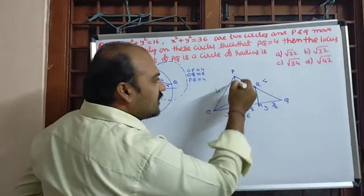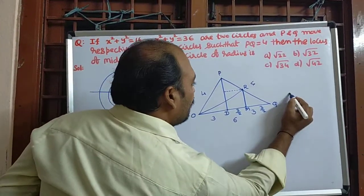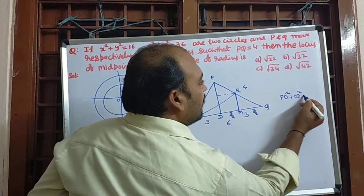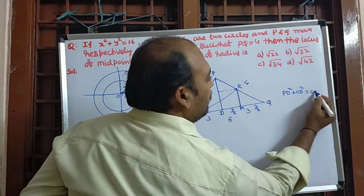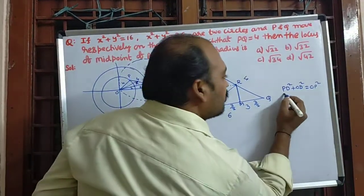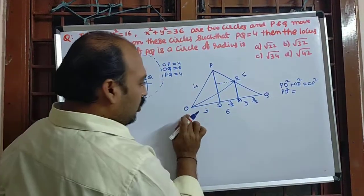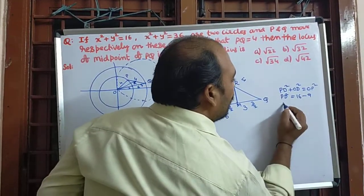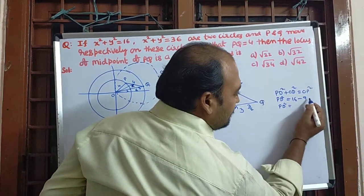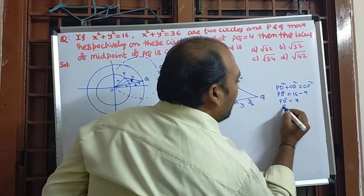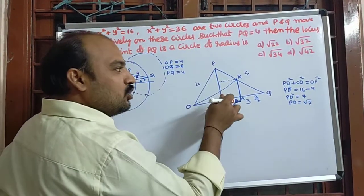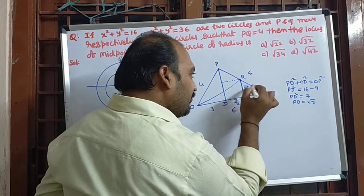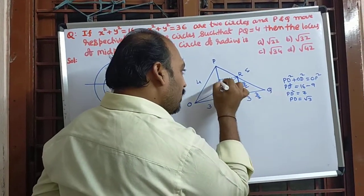Here 4, here 3 is there, obviously PD will be there. So from that, PD² + OD² is equal to OP². From that I want PD value. So PD² is equal to OP² means 4² = 16 minus OD² means 9. So PD² is equal to 16 minus 9 = 7. So PD is equal to √7. So this is completely √7. Whenever OR is the midpoint, from here to here it is √7/2. Even this is also √7/2 from here to here.